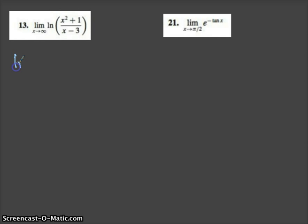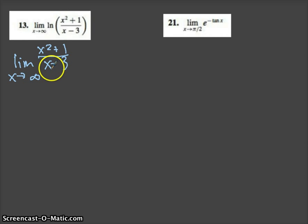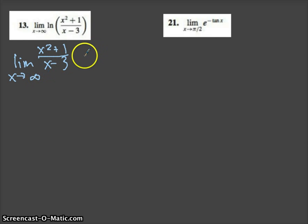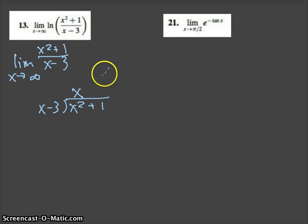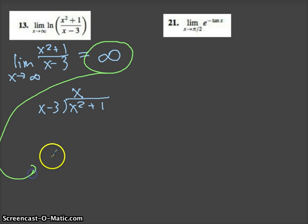Now we're going to look at the limit of (x² + 1) / (x − 3) as x approaches infinity. Because the degree of the numerator is greater than the degree of the denominator, we're going to find the slant asymptote. x goes into x² to give x, and as soon as I see this, I know it's going to be a line with a positive slope.